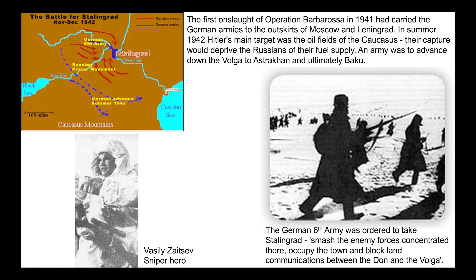The first onslaught of Operation Barbarossa had carried the Germans to the outskirts of Moscow and Leningrad. In the summer of 1942, Hitler set his sights on the oil of the Caucasus — it would give Germany an unlimited supply of oil and cut Russia's oil off. Because Hitler was an egoist, he ordered his army to take Stalingrad no matter what — smash enemy forces, occupy the town, and block communications between the Don and the Volga rivers. This is when people like sniper Vasily Zaitsev became famous picking off German officers and soldiers.